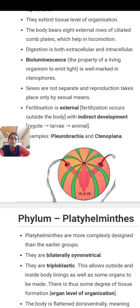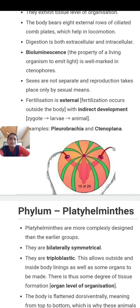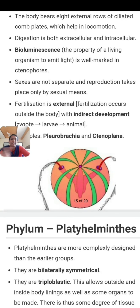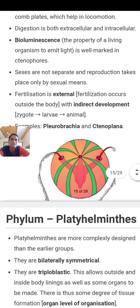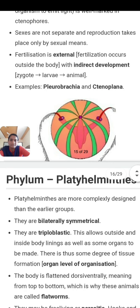A unique characteristic of Ctenophora is bioluminescence, meaning the living organism can emit light. They are hermaphrodite — sexes are not separate. Reproduction takes place only by sexual method; both male and female characters are found in the same individual. Fertilization is external, occurring outside the body, with indirect development. After fertilization, a zygote forms, which develops into larvae, and larvae develops into the adult animal.